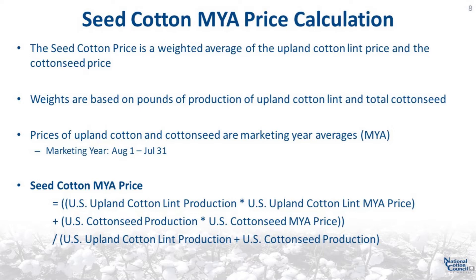Now we'll discuss the calculation of the seed cotton marketing year average price. The seed cotton price is a weighted national average of the upland cotton lint price and the cotton seed price. The weights are based on pounds of production of upland cotton lint and total cotton seed. The National Marketing Year Average Price is calculated using monthly data for prices paid to farmers obtained by a survey of cotton buyers. USDA publishes monthly estimates throughout the marketing year, and the monthly marketing year average price is weighted by the average number of bales marketed. The marketing year for cotton is August 1st through July 31st. The months November through February carry the largest weights in the annual average. The NASS cotton ginning survey program collects data used to determine monthly cotton seed prices, and all active gins for a given crop season from the 17 cotton producing states are included in the survey.